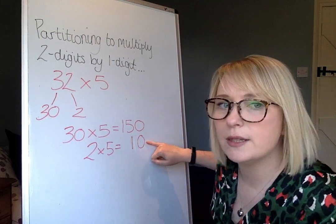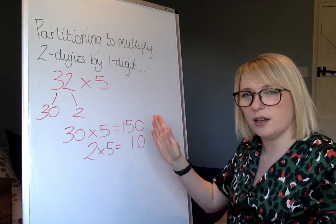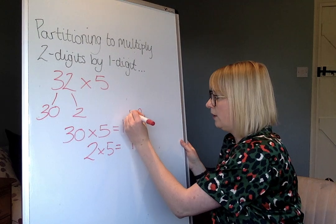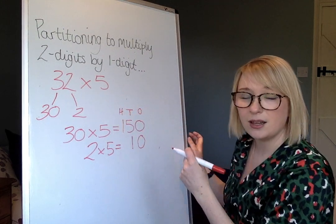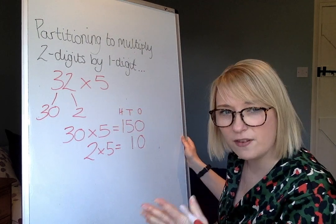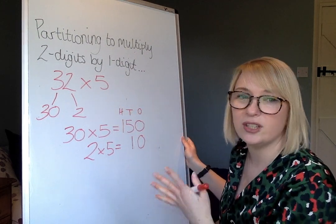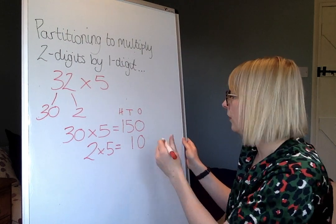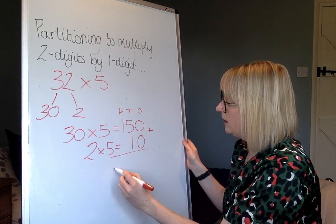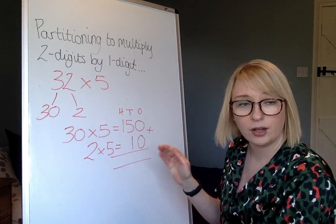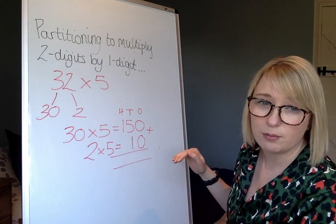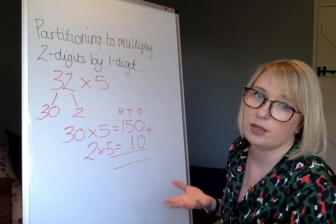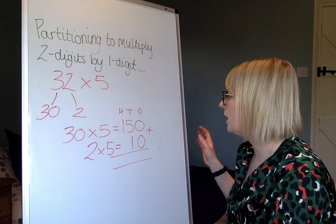Now notice when I wrote my answers here, I lined up my place value columns — here are my ones, here are my tens, and here are my hundreds. That's going to help with our final step, which is to add the two numbers that you've got here. We're going to do a column addition to do that — you don't have to do column addition, you could do a blank number line, you could use any of your addition methods that you're used to using.